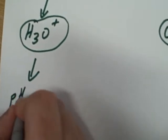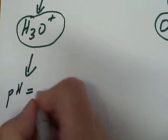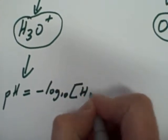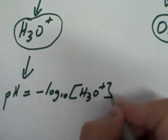Now if I want to calculate the pH of a strong acid, it's dead easy. pH equals minus log to the base 10, the concentration of my H3O plus ions.